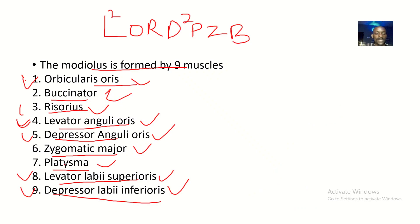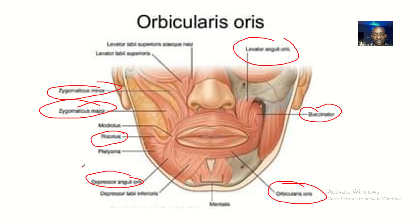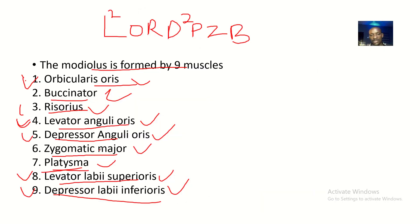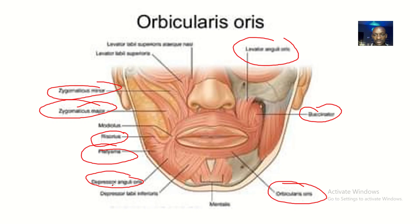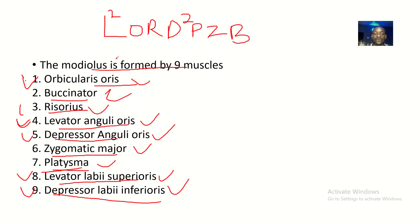Then we have platysma — I think this is the platysma. Then we have levator labii superioris. It's not a perfectly clear image but you can make sense of it and reference clearer images from your class. Lastly, we have depressor labii inferioris.